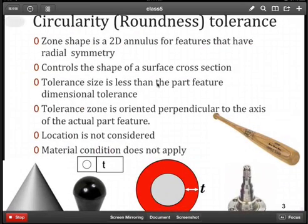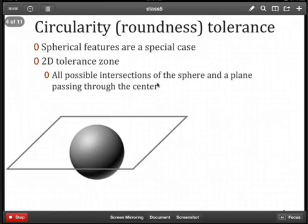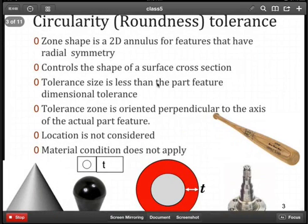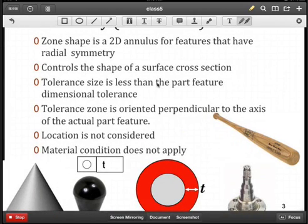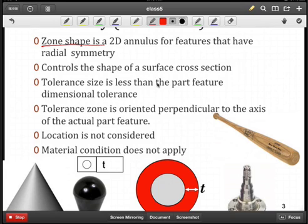First, for circularity, you'll also see this referred to as roundness. And in roundness, we're dealing with a zone shape that represents a 2D annulus. Now, when I think of a 2D annulus, I'm thinking of this ring shape here. So an annulus is a ring in two dimensions. And clearly, we need to have some features that have a radial symmetry.